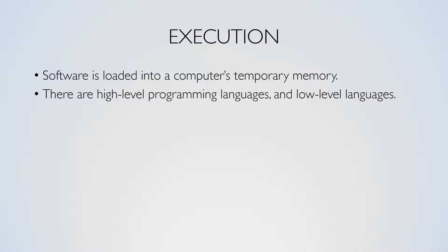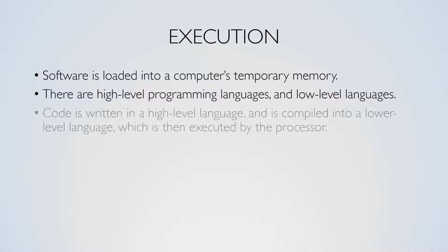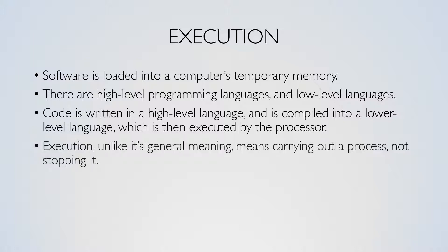Computer code is written in a high-level language, such as C++. High-level languages are generally much easier to program in than low-level languages. Computer code is compiled by a compiler into a lower-level language, which is simpler and faster for the processor to execute. Compiling is a one-way process. The term execution in computing refers to a process being carried out or run.